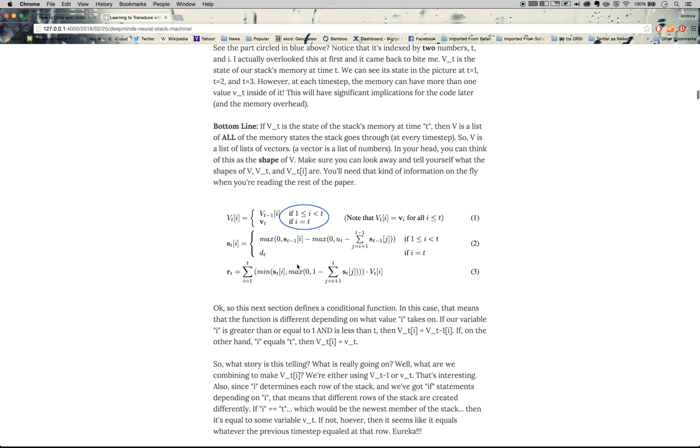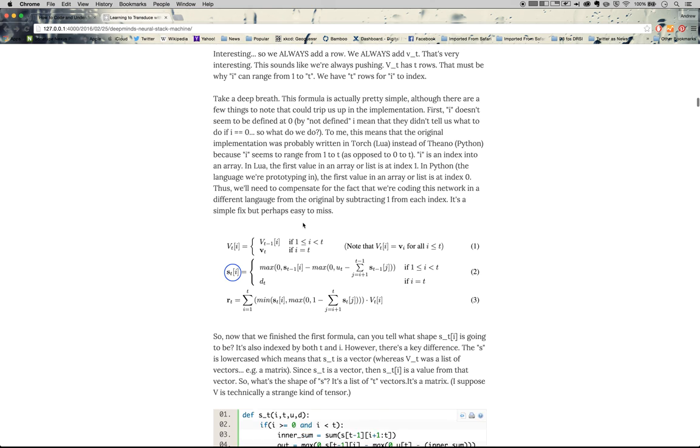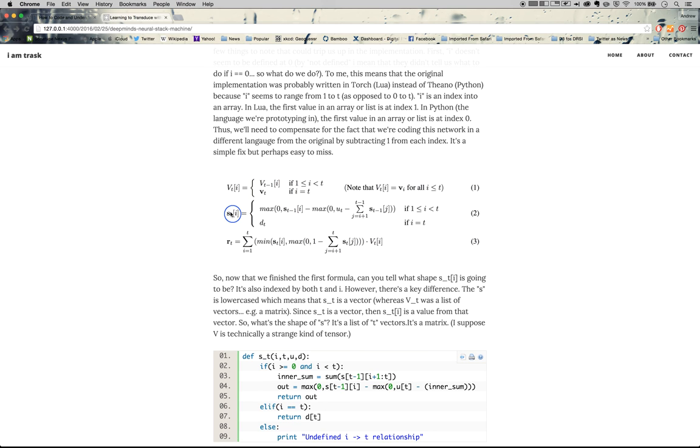So, when I equals T, that means we're at the top. If I is between 1 and T, we are in the middle. And let's jump to the next one. Strength. Strength vector. Now, this one is a little bit hairier. So let's start with what we know. DT, remember our U versus D conundrum? So this is the push weight, the amount that we're pushing onto the stack. We have these same conditionals that we saw up here. So if I equals T, that means we're on the top.